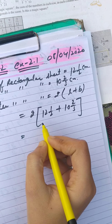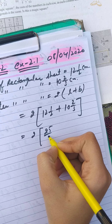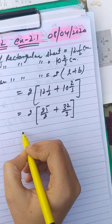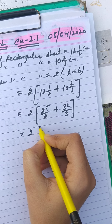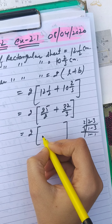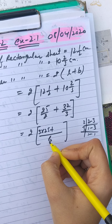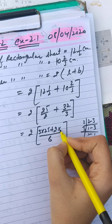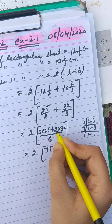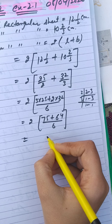This is a mixed fraction, so we have to make it an improper fraction. 12 and 1/2: 12 times 2 is 24, plus 1, that is 25/2. Plus 10 and 2/3: 10 times 3 is 30, plus 2, that is 32/3. Now the denominator is not the same, so we take LCM of 2 and 3, which is 6. So: 2 divided by 6 is 3, so 3 times 25; plus 3 divided by 6 is 2, so 2 times 32.